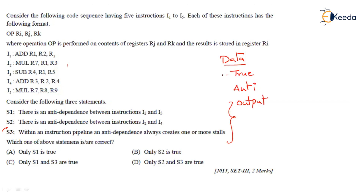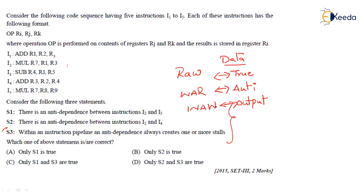True dependency is also called RAW — Read After Write. Anti-dependence is also called WAR — Write After Read. Output dependency is called WAW — Write After Write.